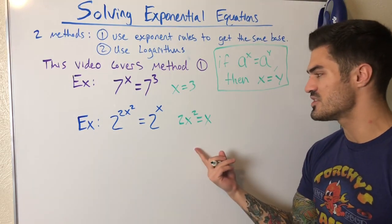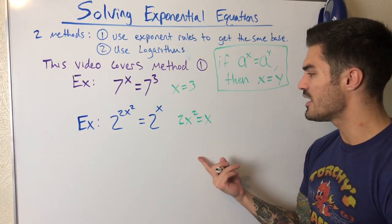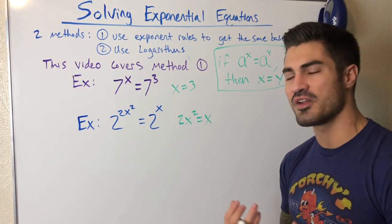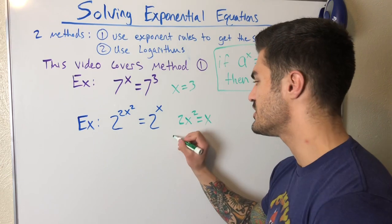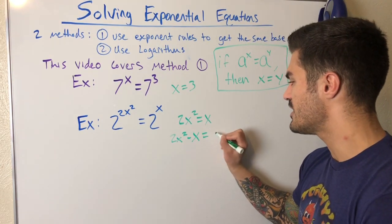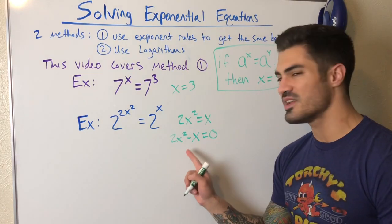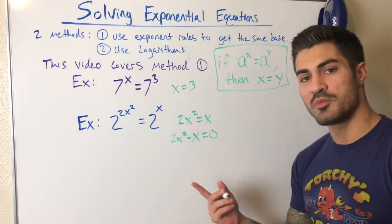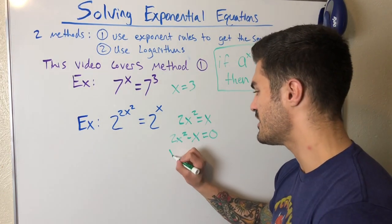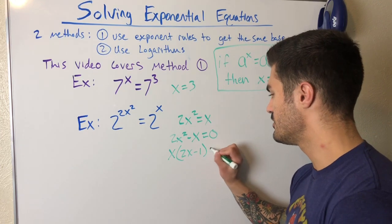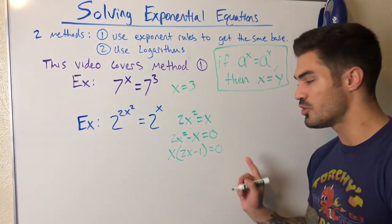Let's finish off this example. We can subtract x over and set zero to one side and factor. So I'm left with two x squared minus x equals zero. Anytime I see an x squared, this is usually the method I'm going to use. I'm going to factor because there's going to be more than one solution. I can factor out an x.